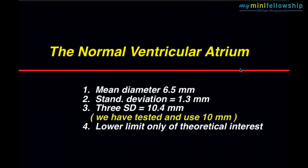If you measure a large number of ventricular atria, you will find that the mean diameter is six and a half millimeters. One standard deviation is 1.3 millimeters and three standard deviations is 10.4 millimeters. We have tested and used 10 millimeters as the upper limit of normal. Why? Because I like round numbers and I'm proud to say that most of the world uses 10 millimeters as the upper limit of normal for the fetal ventricular atria. There is a lower limit, but it's only of theoretical interest to us because there are no diseases or anomalies of the fetal brain which produce a ventricle that is too small.